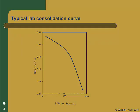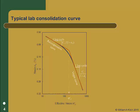Given typical laboratory data such as this, we discussed in the recent module how we can use Casagrande's construction to determine the pre-consolidation stress and from that reconstruct a field consolidation curve. When we are done with that we will have a curve that looks like this with both a recompression and a virgin curve. We might think that a laboratory curve like this indicates that the soil is over consolidated because it has both a recompression and a virgin curve.